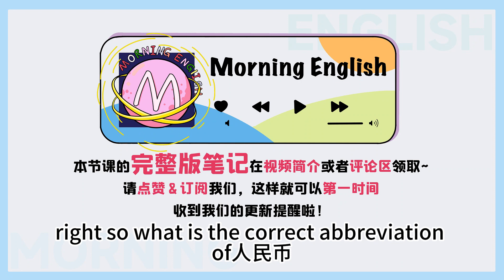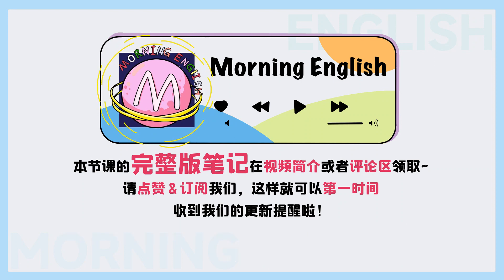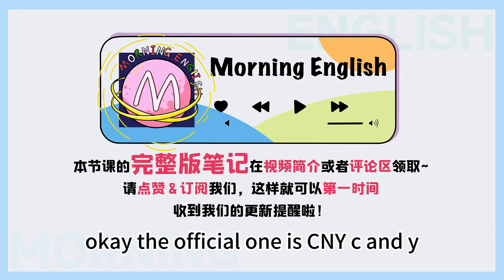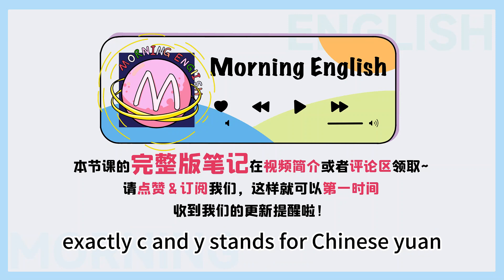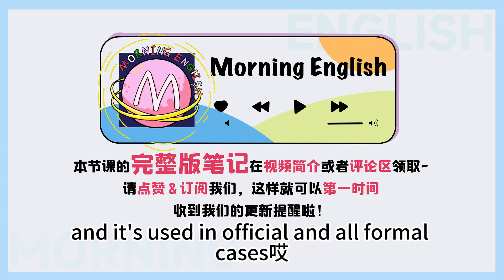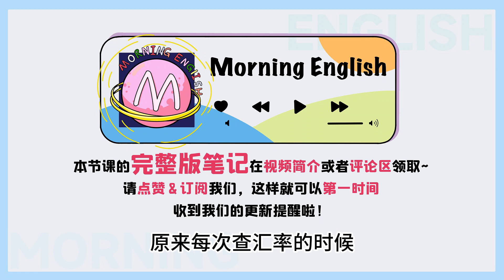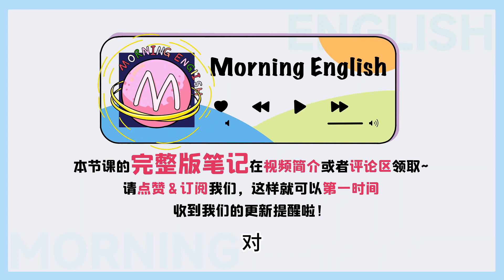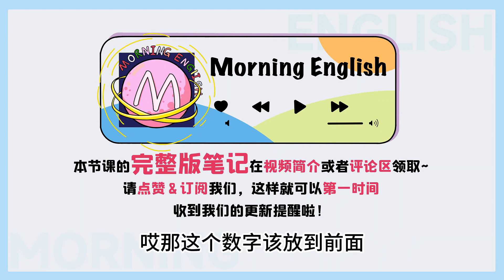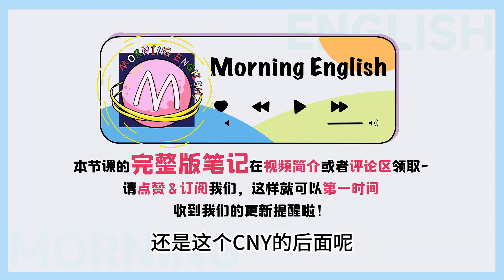So what is the correct abbreviation of 人民幣? The official one is CNY. Let me guess, CN means Chinese, and Y means yuan. Exactly, CNY stands for Chinese yuan, and it's used in official and all formal cases. 原來每次查匯率的時候，人民幣後面顯示的就是CNY三個字母，而不是RMB。